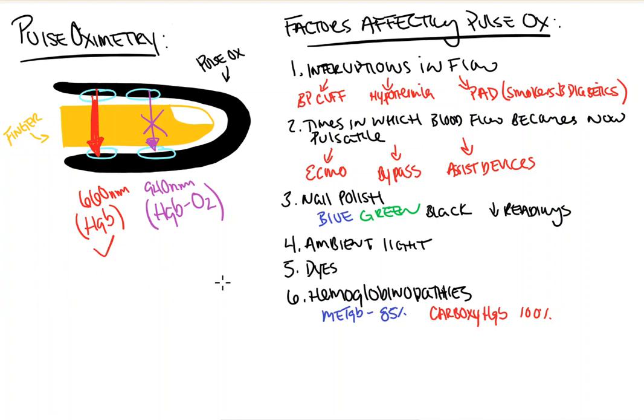The final part to touch on is the PI, or the perfusion index, which is an assessment of pulsatile strength at a given site. It's calculated by the computer as a ratio of pulsatile to non-pulsatile blood flow.